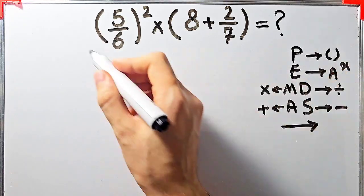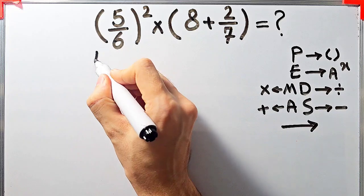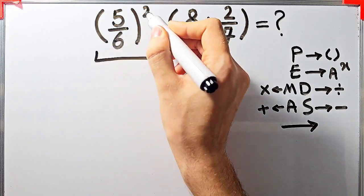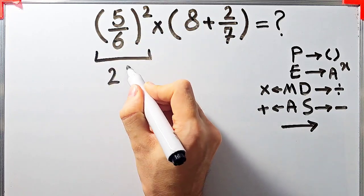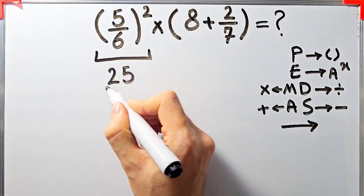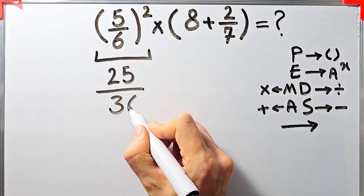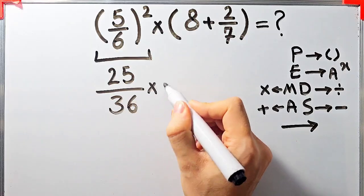First we simplify the parentheses. Inside the first parentheses we have five over six to the power of two. Five over six to the power of two equals twenty-five over thirty-six. Now we have twenty-five over thirty-six times open parentheses eight plus two over seven close parentheses.